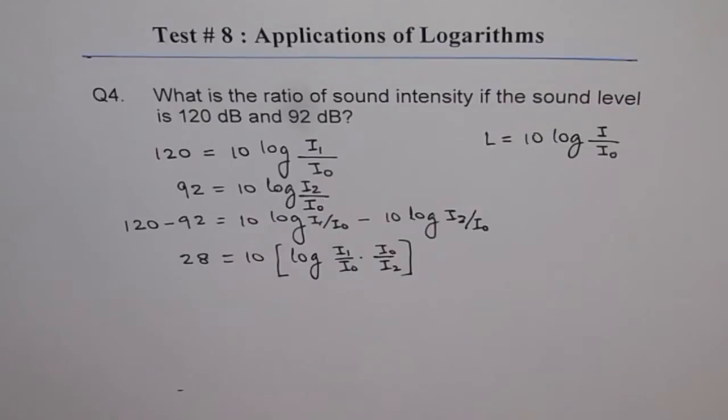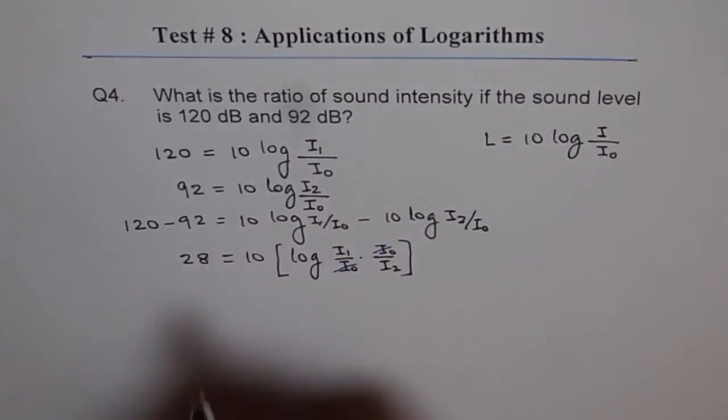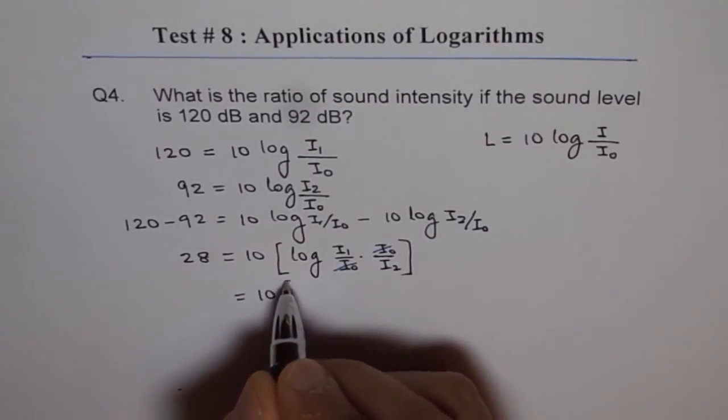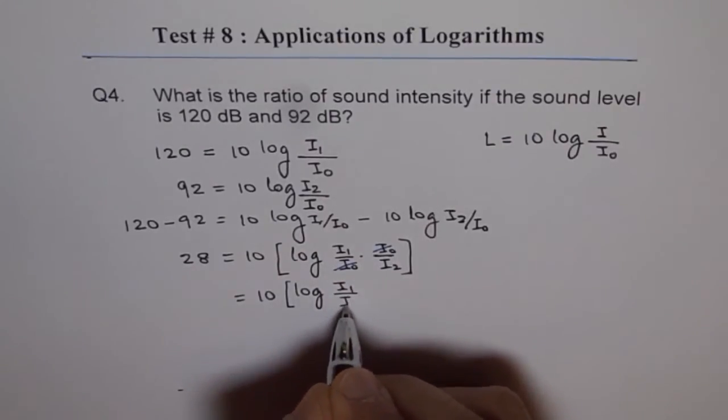Now here I0 and I0 cancel out, and so we get 10 times log of I1 over I2. That is the ratio of intensity.